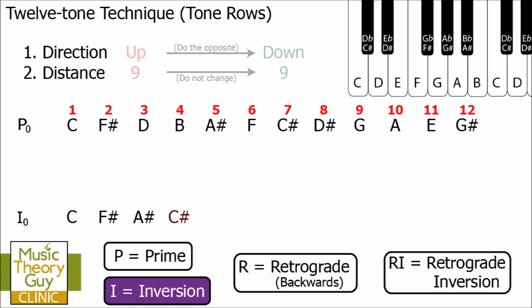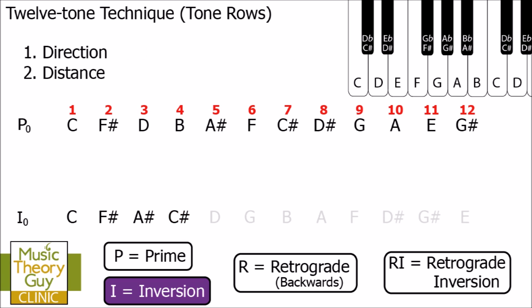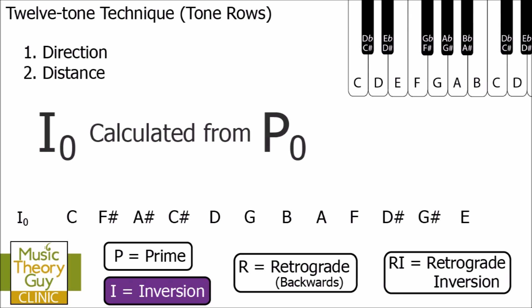If we carry on working out the rest of the notes of I0, this is what the full row looks like. Remember: I0 is calculated from P0 using those two steps — direction (we do the opposite) and distance (we keep exactly the same). If that's the case for I0, then I1 is calculated from P1, I5 from P5, I8 from P8, and so on.